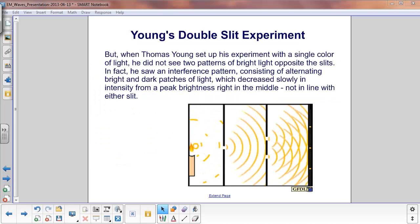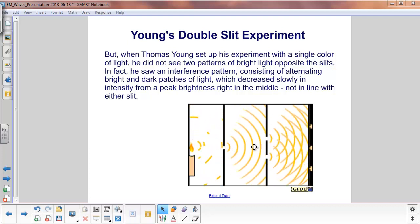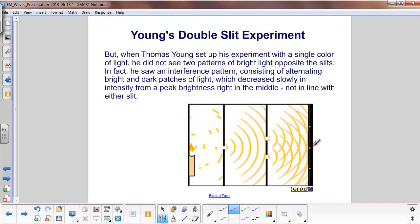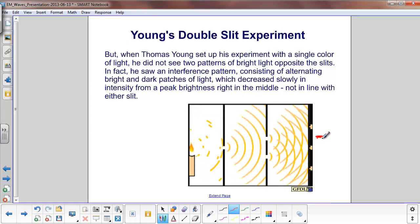But when Thomas Young set up his experiment with a single color of light, or monochromatic light, he did not see two bright patterns. For example, if they were baseballs, you would expect to see a large amount of light collected over here, and also here, in line with these two slits.